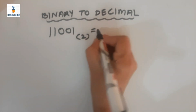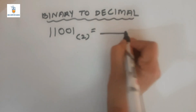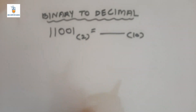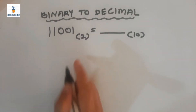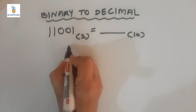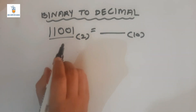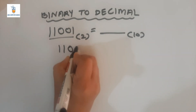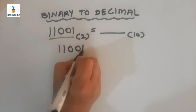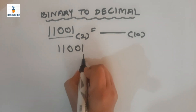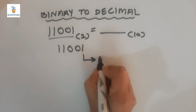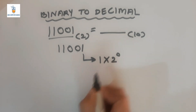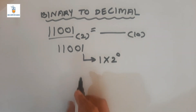Let us take one example: 11001 to the base 2 — we want to convert it to its equivalent form to base 10. It is very simple. What we have to do is note down the weights of 2 from right to left in the given number.